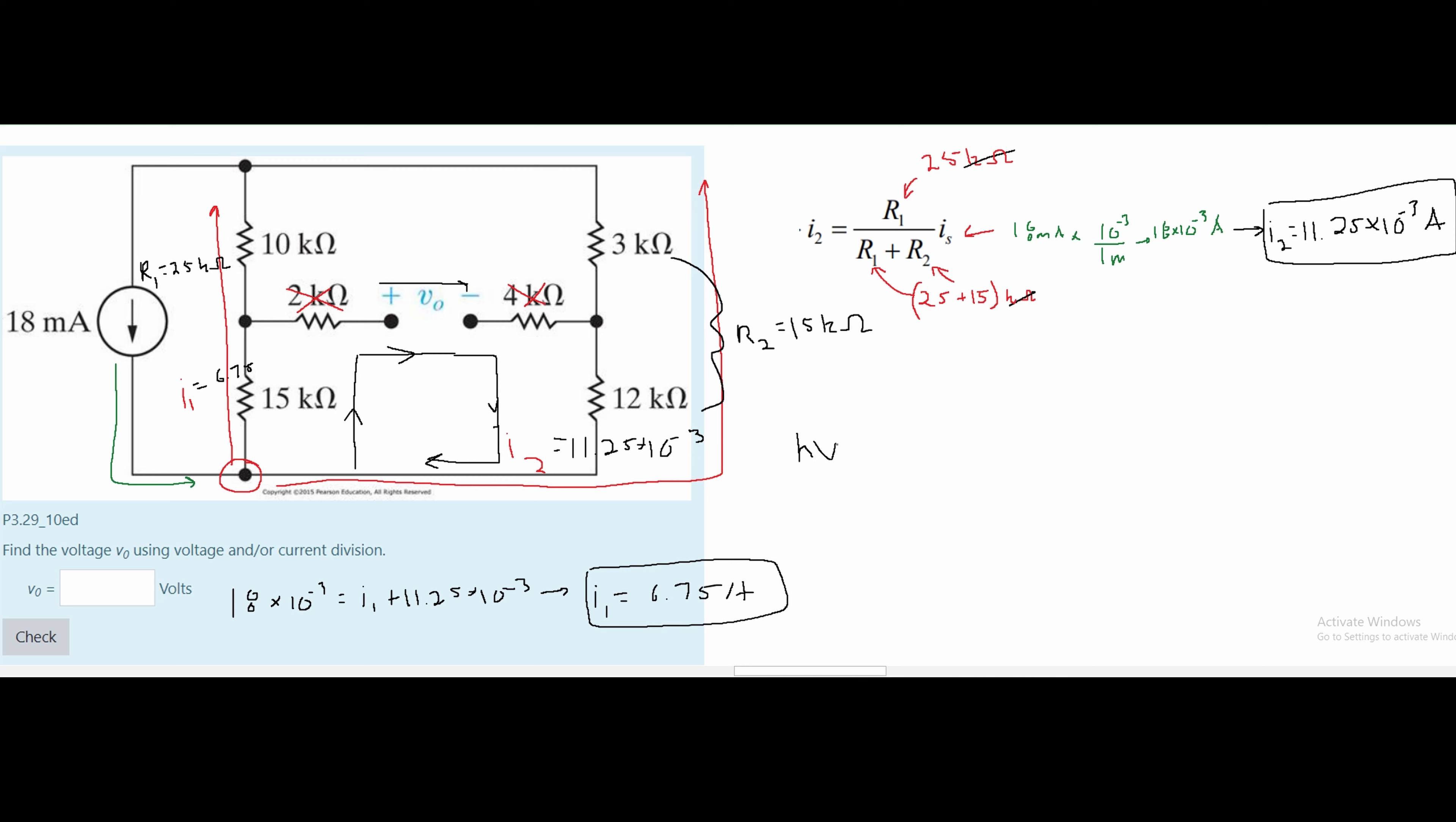So we're going to say Kirchhoff's voltage law is equal to zero and we have our first voltage which is this part right here. So we have a 15kohm resistor times 6.75 times 10 to the negative cubed because this is the resistance for that, plus our V0, and now we have to have a minus sign.